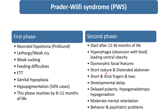Characteristic clinical features in the second phase include short stature, distended abdomen, short thick fingers and toes, and delayed development — the child will have global developmental delay. There is delayed puberty and central type hypogonadotropic hypogonadism. In 5 to 10% of cases, precocious puberty can also be present.